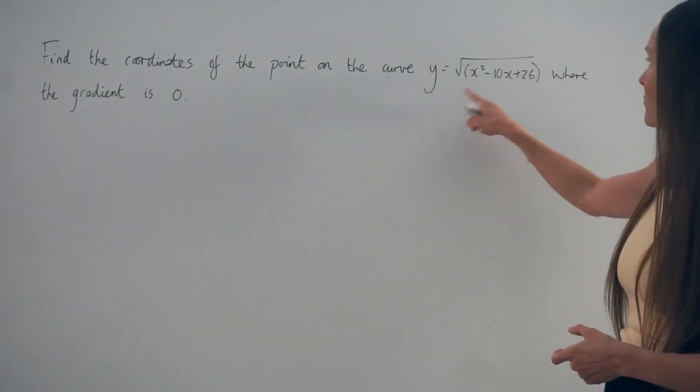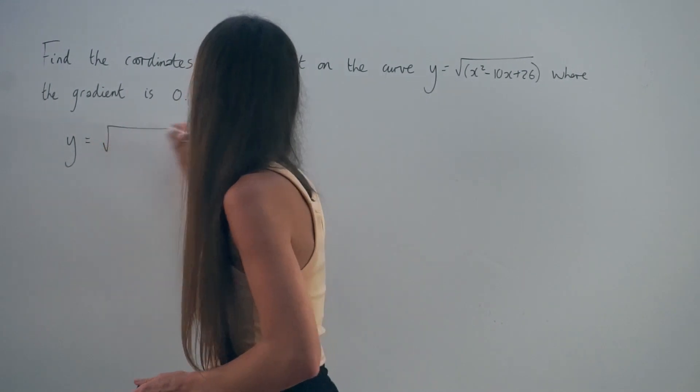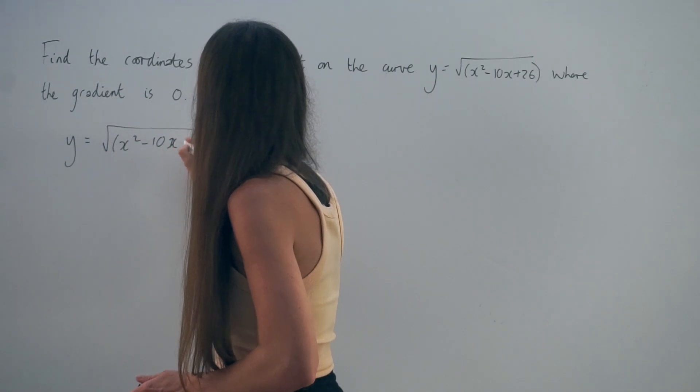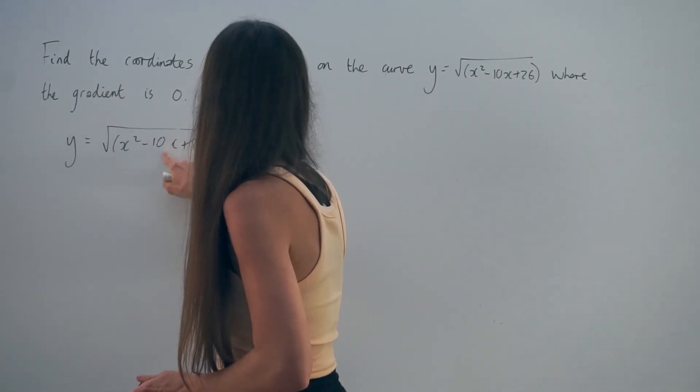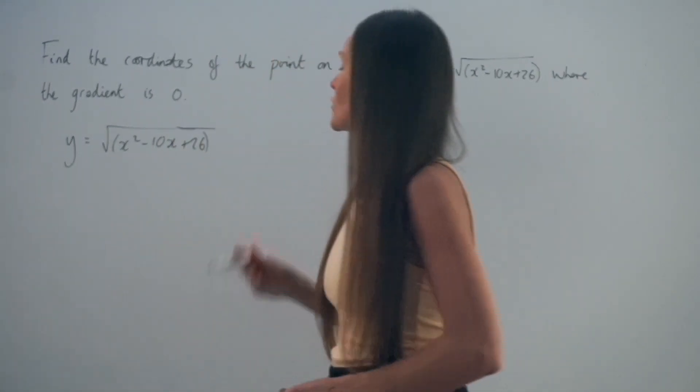So I'm going to start by writing the equation down over here. So y equals the square root of x squared minus 10x plus 26. And I'm going to find the derivative of this equation.